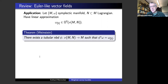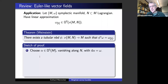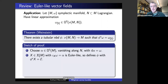The Weinstein theorem tells you that there exists a tubular neighborhood embedding which takes this model symplectic form to your given symplectic form — always as germs of such embeddings. Here's how you prove it using Euler-like vector fields. First you choose a primitive: a one-form which vanishes along N and whose differential is the given symplectic form. You can easily get such a primitive, for example, by taking an initial tubular neighborhood embedding and using the homotopy operator. Using this one-form, you define the vector field whose contraction with omega is this one-form. Then you can see easily that this vector field is Euler-like, so it determines a tubular neighborhood embedding under which the Euler vector field corresponds to this Euler-like vector field X.